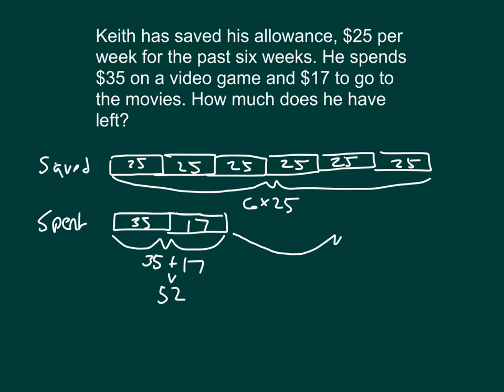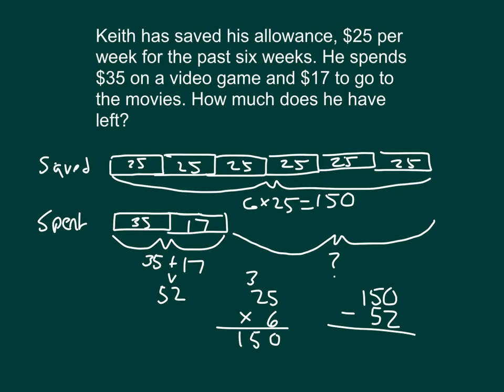Now, our question mark, or what we're solving for, is the amount that Keith will have left after he spends the money. Let's figure out six times 25 first. Six times 5 is 30, zero, regroup the three. Six times two is 12, plus three is 15. So that is $150. He has saved $150 from his six weeks worth of allowance. He spends $52. So, we go $150 subtract $52, which gives us $98.